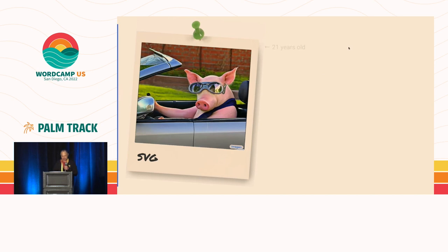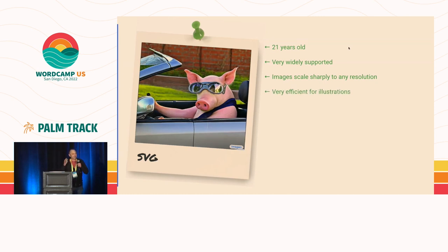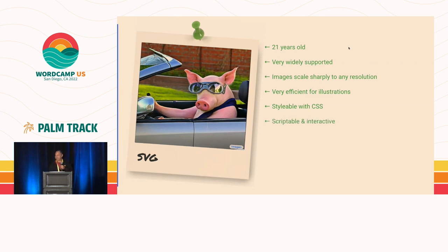Then along comes SVG, 21 years old and very widely supported. These are vector images — not raster images — so they scale sharply to all different sizes. Think of an illustration like a star that you can scale to any size and it remains sharp. SVG is also very efficient for illustration-type images and is styleable with CSS, so you can apply color or rotate it, which you can't do with regular images. It's also scriptable — you can add JavaScript inside your SVG and make it interactive.